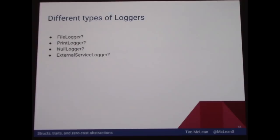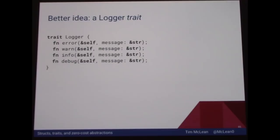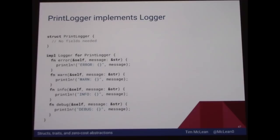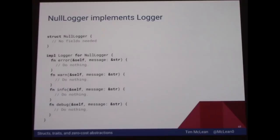How about we use a logger trait? A trait is basically like an interface if you're coming from Java. You define a series of methods with their signatures, but you don't define the actual implementations. Now that we have a trait called Logger, we can have a new type called PrintLogger — a specific type of logger. We implement Logger for PrintLogger and provide implementations of those methods. We can do the same with NullLogger, which would have empty implementations of those methods, showing it does nothing.